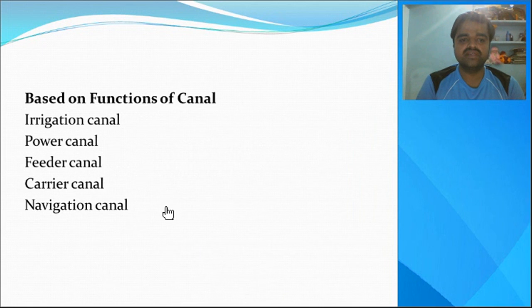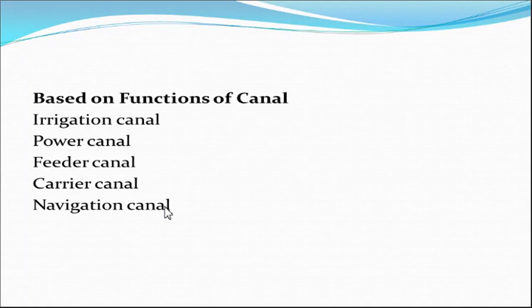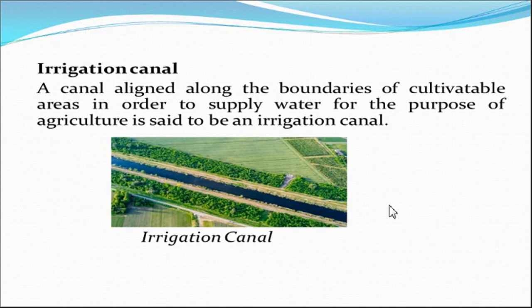Next is the classification of canals based on function. There are five types: irrigation canal, power canal, feeder canal, carrier canal, and navigational canal. An irrigation canal is a canal aligned along the boundaries of a cultivatable area in order to supply water for the purpose of agriculture.